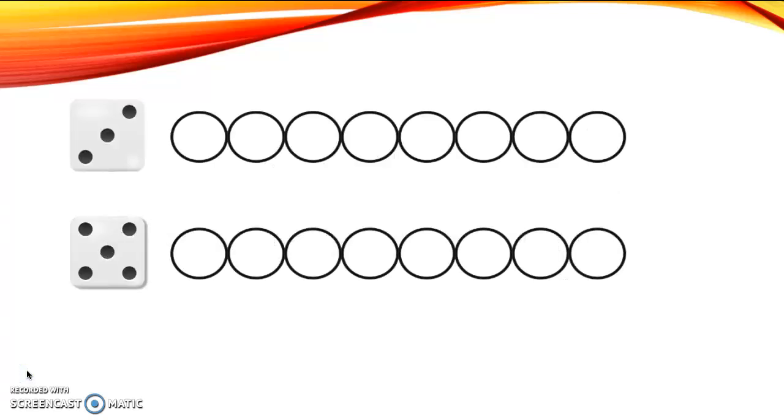Alright, so our first dice has how many dots on it? Can you tell me? Excellent. Three. And our second dice that I rolled has how many dots on it? Five. Perfect. So next you'll see some counting beads. I'm going to go ahead and color in a bead, one for each number on the dice, and then we'll talk about how we can compare them, okay?